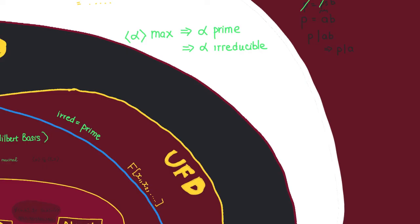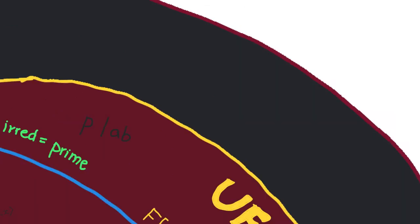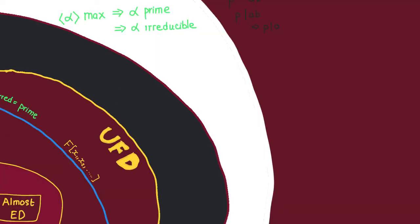In the special case of a UFD, irreducibles are also prime. Because if we have an irreducible p dividing a·b, we can consider the unique factorization of a·b into irreducibles. This p must appear in that factorization, so it must be a factor of a or b.